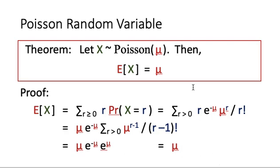Whenever we define a new type of random variable, let us study the expected value, the moment generating function, and the Chernoff bounds. Suppose that x is a Poisson random variable with parameter mu and we want to show that the expected value of x is equal to mu. The proof is straightforward using the definition directly. The expected value of x equals the summation over all possible values r, weighted by the probability that x equals r.